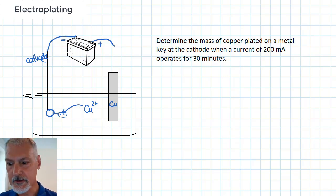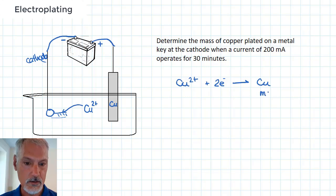My question is, how much copper will be deposited on the key when it's operating with a certain current over 30 minutes? First thing I need, as with most stoichiometry questions, is a balanced equation. In this case, I need a balanced half reaction. So what's happening here is the copper 2 plus is picking up two electrons and turning into copper solid. And my question here is, what's this mass?